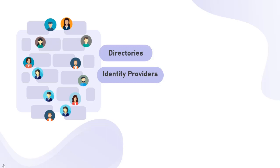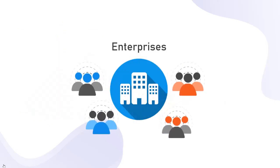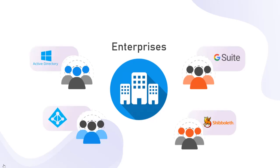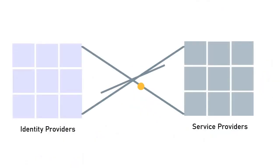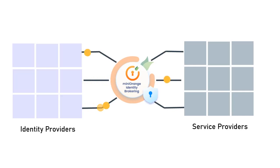Like directories, identity providers, or databases — this is an ideal case of implementing SSO, but it is rarely the case with enterprises. In enterprises, user identities are generally spread across various directories or identity providers, and in the majority of cases each supports a different SSO protocol. Enabling SSO for them using the traditional implementation can be a challenging task, and hence in such cases SSO is implemented using identity brokering solutions.